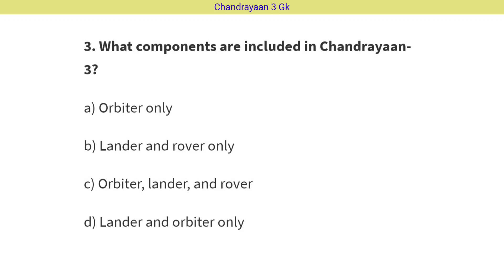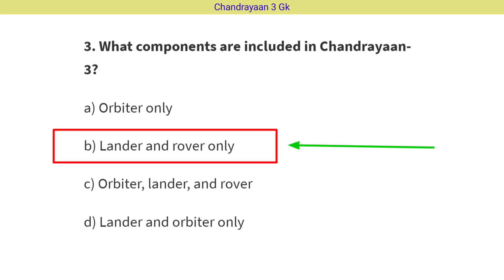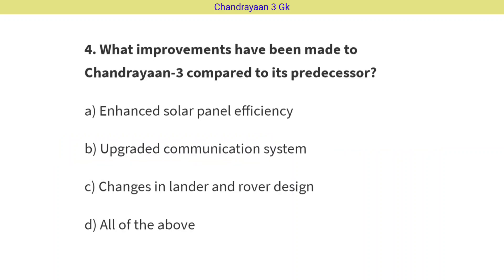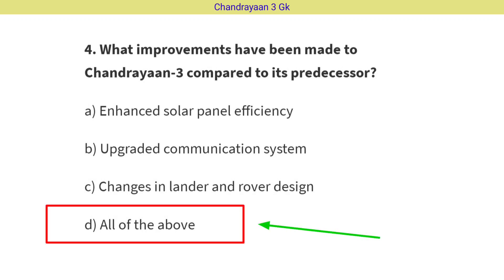Question No. 3: What components are included in Chandrayaan-3? The correct answer is Option B, i.e. Lander and rover only. Question No. 4: What improvements have been made to Chandrayaan-3 compared to its predecessor? The correct answer is Option D, i.e. All of the above.